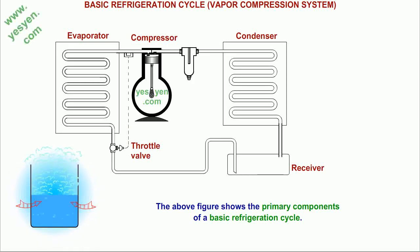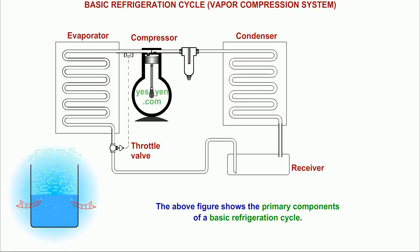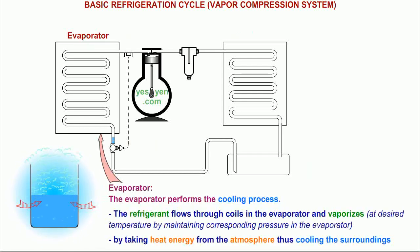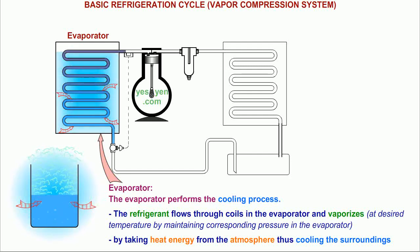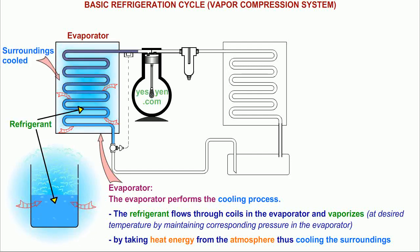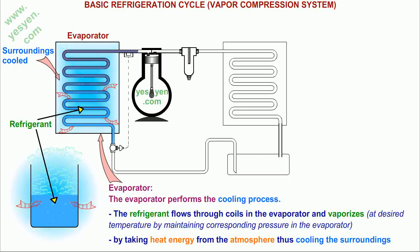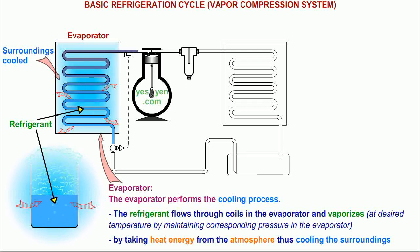The above figure shows the primary components of a basic refrigeration cycle. Evaporator: The evaporator performs the cooling process. The refrigerant flows through coils in the evaporator and vaporizes at the desired temperature, by maintaining corresponding pressure in the evaporator, by taking heat energy from the atmosphere,